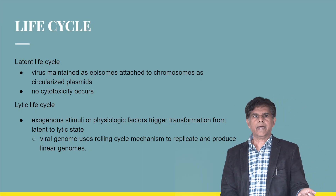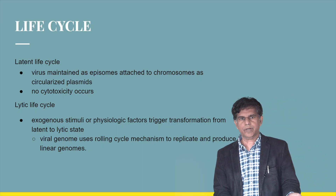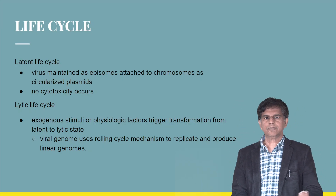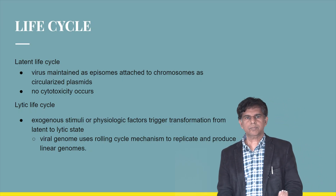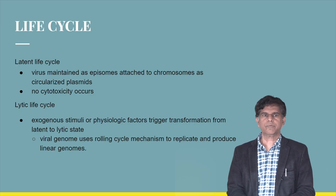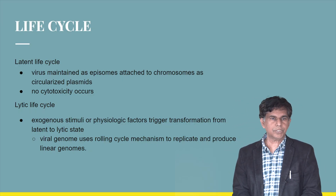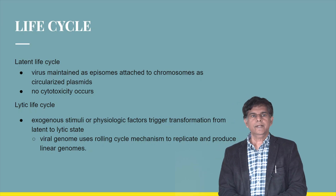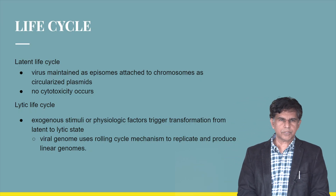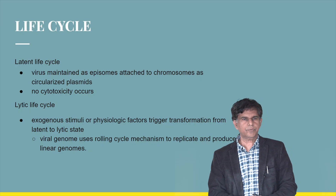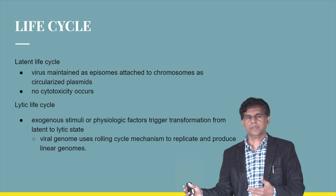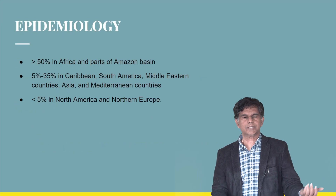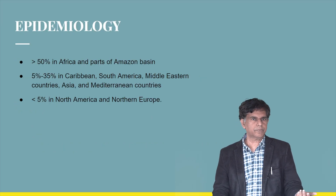Epidemiology: seroprevalence is around 50% in Africa and parts of the Amazon basin, 5 to 35% in the Caribbean, and less than 5% in North American and North European populations. Risk factors include residence in a high-endemic area, men who have sex with men, and HIV. Kaposi Sarcoma risk factors include HIV, low CD4 count, men who have sex with men, Mediterranean or Jewish background, older age, male sex, and diabetes.